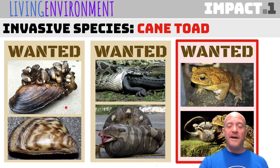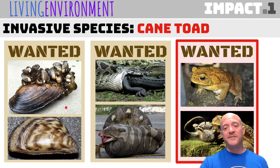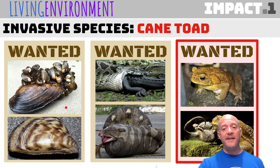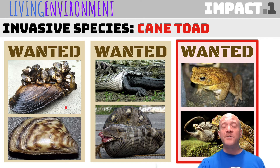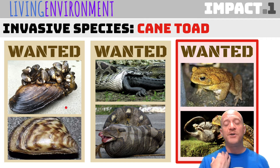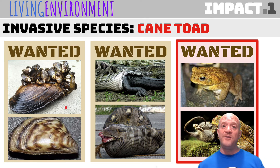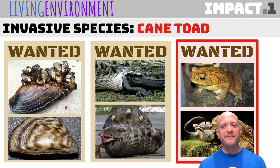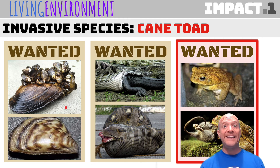Cane toads were brought into Australia to help with a certain type of beetle that was infecting their sugar cane, but the cane toads didn't eat the beetles — they ate everything else. Also, cane toads are toxic; they secrete venom. So if a dog licks or eats a cane toad, your pet could die. Cane toads are found in areas of Florida in the United States, but we don't have cane toads up here in New York yet.